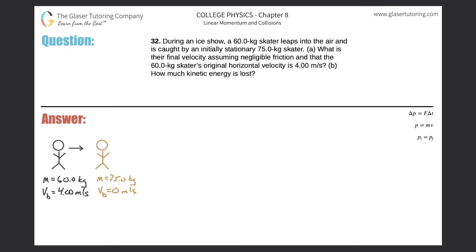Number 32, during an ice show, a 60 kilogram skater leaps into the air and is caught by an initially stationary 75 kilogram skater. Letter A, what is their final velocity assuming negligible friction and that the 60 kilogram skater's original horizontal velocity is four meters per second?